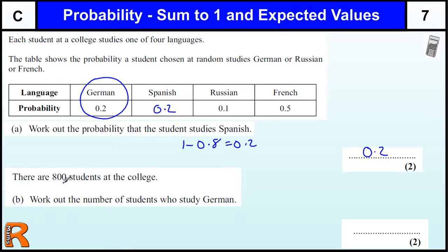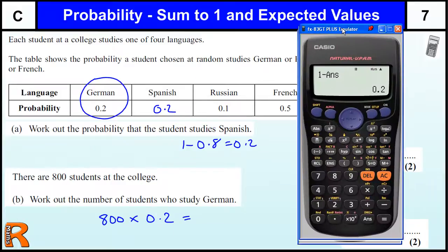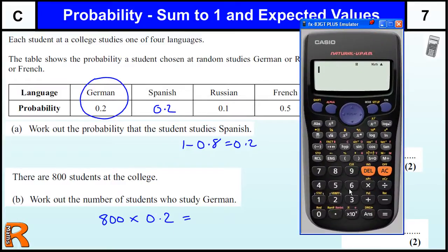Just do 800 times 0.2 and that gives us 160. Let's use a calculator: 800 times 0.2 equals 160. Quite often when it's to do with an experiment, we're talking about the expected number.